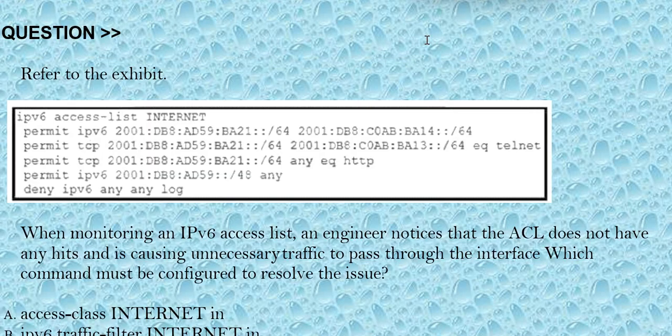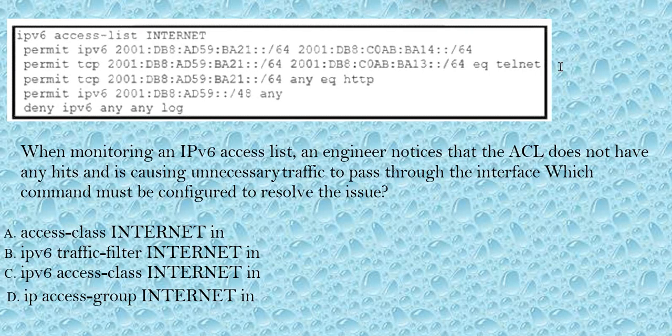Refer to the exhibit. When monitoring an IPv6 access list, an engineer notices that the ACL does not have any hits and is causing unnecessary traffic to pass through the interface. Which command must be configured to resolve the issue? Option A: access-class internet in. Option B: ipv6 traffic-filter internet in. Option C: ipv6 access-class internet in. Option D: ip access-group internet in. The correct answer is option C.